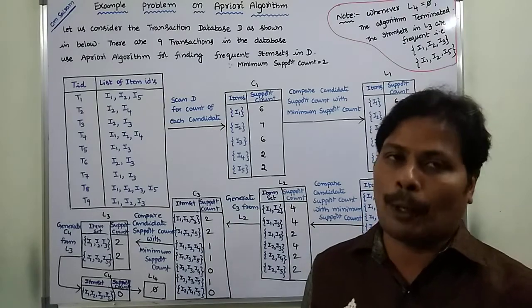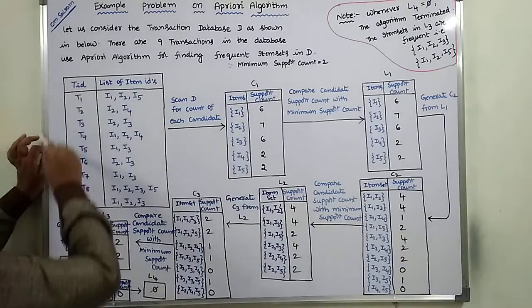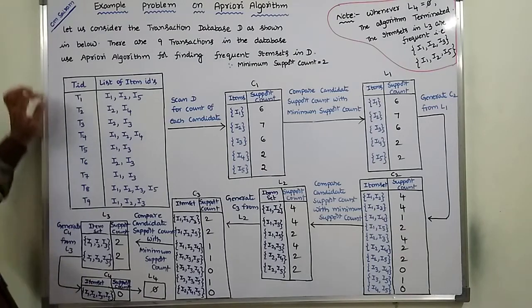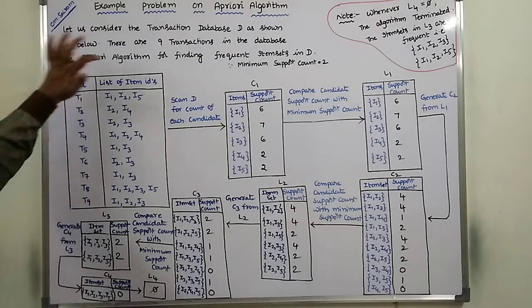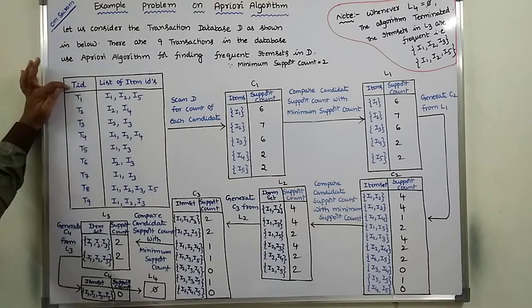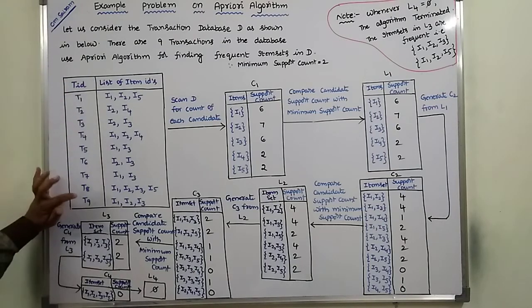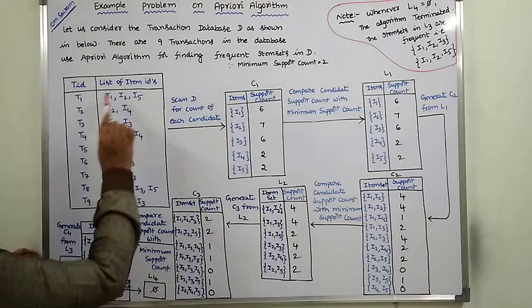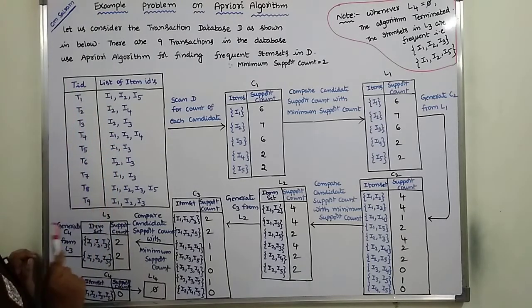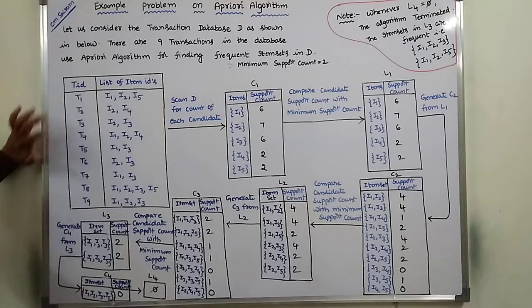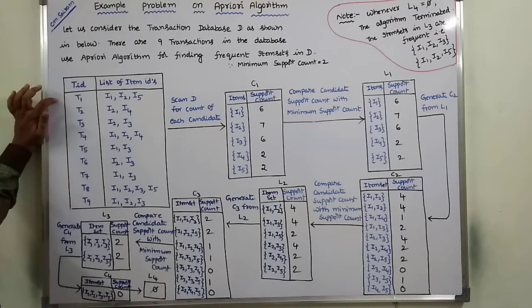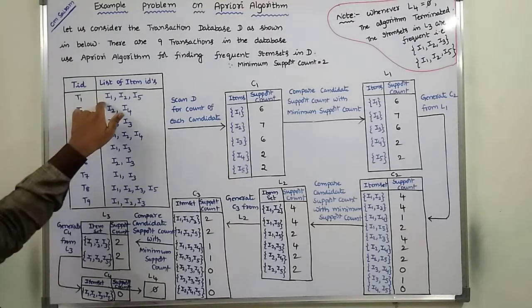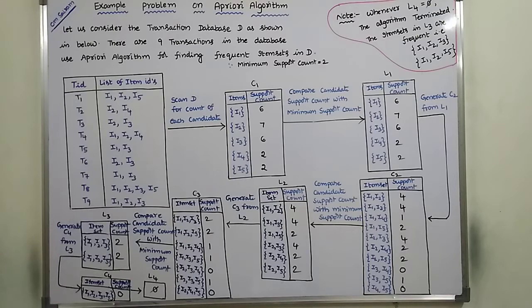Now we go for the example problem. This is the transactional database. In that transactional database, there are two columns. The first column represents the transaction IDs, T1 to T9. The second column represents the list of item IDs — there are five items: I1, I2, I3, I4, and I5. These are the nine transactions, and each transaction is done by one particular customer, with these being the items purchased.